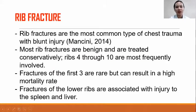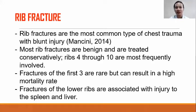Rib fracture. According to Mancini 2014, rib fractures are the most common type of chest trauma with lung injury. Broken ribs are most commonly caused by direct impacts such as those from motor vehicle accidents and falls. Most rib fractures are benign and are treated conservatively. Ribs 4 to 10 are most frequently involved. Fractures of the first three are rare but can result in a higher mortality rate because they are associated with laceration of the subclavian vein or artery.